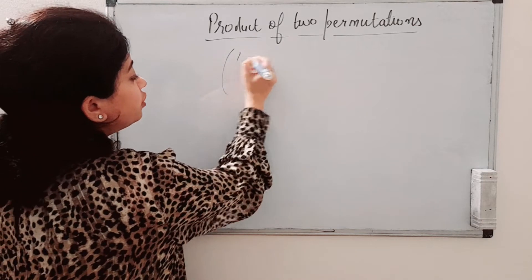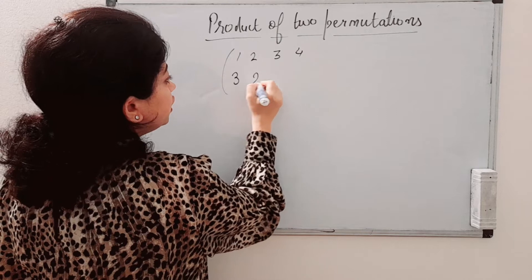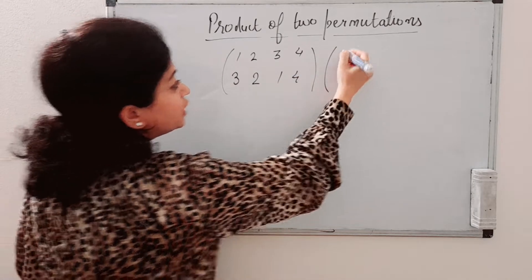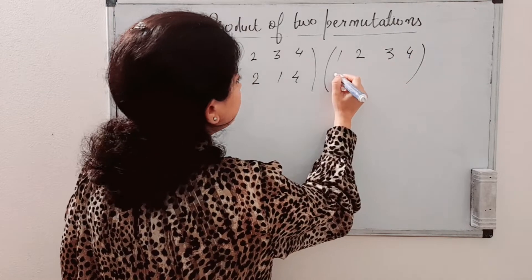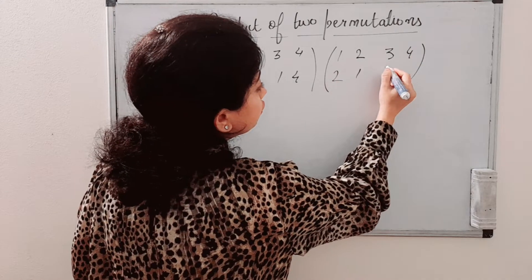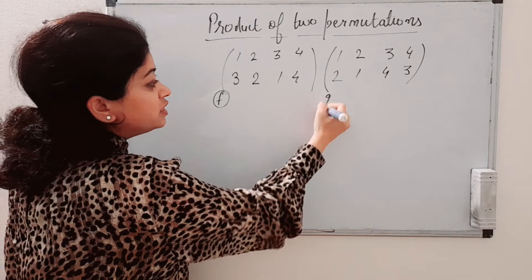If we have two permutations like this: 1, 2, 3, 4 goes to 3, 2, 1, 4, and second permutation is 1, 2, 3, 4 goes to 2, 1, 4, 3, suppose this is F and this is G.